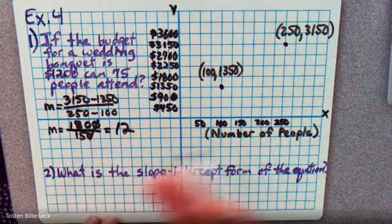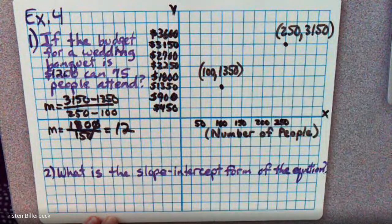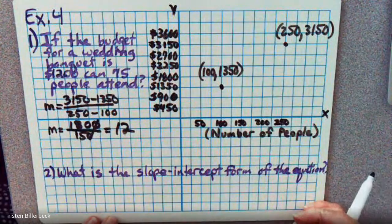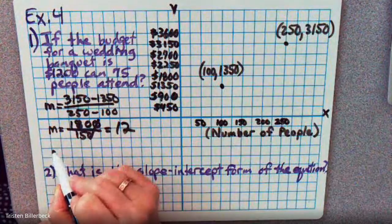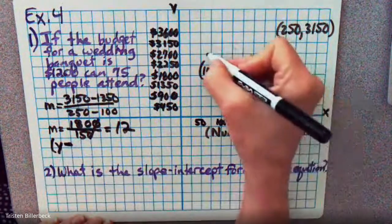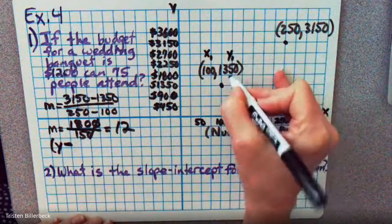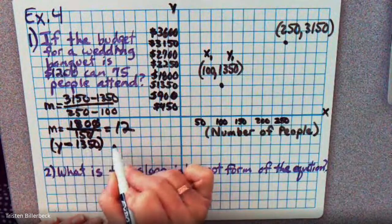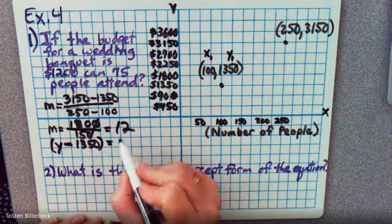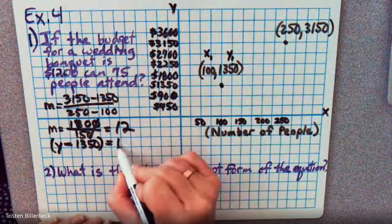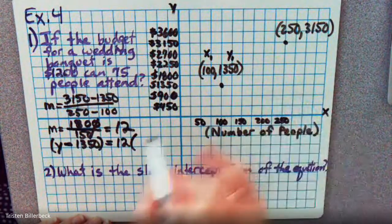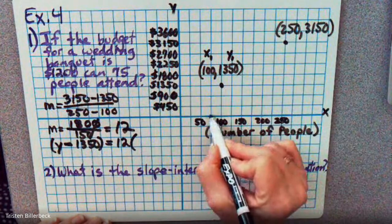Now the most useful form here is point-slope because we have points and a slope, and we don't have a Y-intercept. So the slope-intercept form isn't as useful. So let's look at what this point-slope form would look like. We have Y minus 1350 equals 12 times X minus 100, and we need to know if we have enough for 75 people. So let's substitute X equals 75.